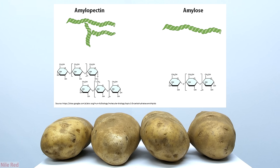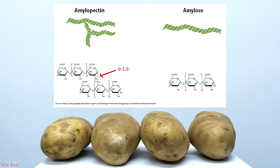Starch actually consists of two major components: one is called amylose and the other is called amylopectin. The amylose is entirely alpha-1-4 linked glucose units, but amylopectin also has some alpha-1-6 linked glucose units. The addition of these alpha-1-6 linked units gives it a little bit of branching and more bulk, altering its properties compared to amylose.